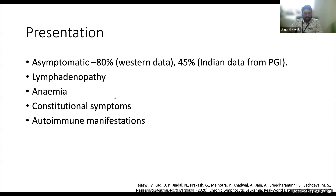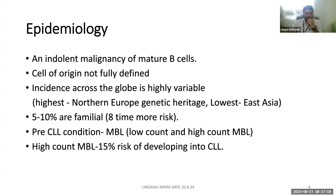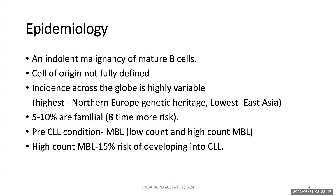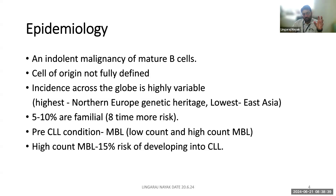The incidence of CLL is quite variable globally. Unlike other hematological malignancies, CLL is very predominant in the western world, particularly northern Europe, where large CLL study networks operate. It is lowest in East Asian countries, particularly Japan. In India, the incidence is also not very high. CLL is one B-cell malignancy with a familial component — five to ten percent can be familial, and it is almost eight times more likely to have a familial origin compared to lymphomas.